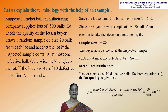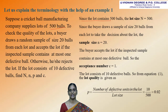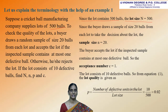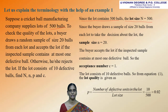In this example, the lot contains 500 balls. Since the lot contains 500 balls, this is denoted by the lot size, so capital N is equal to 500. Since the buyer draws a sample of size 20 balls from each lot to take the decision about the lot, that is the sample size, so small n is equal to 20.